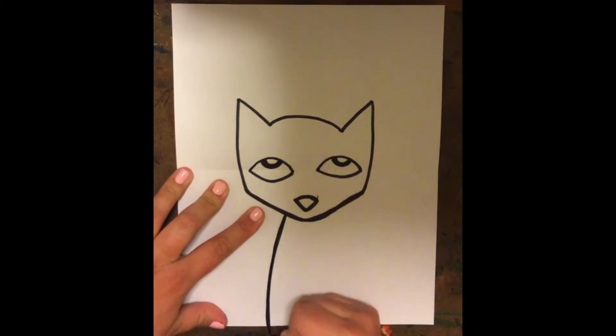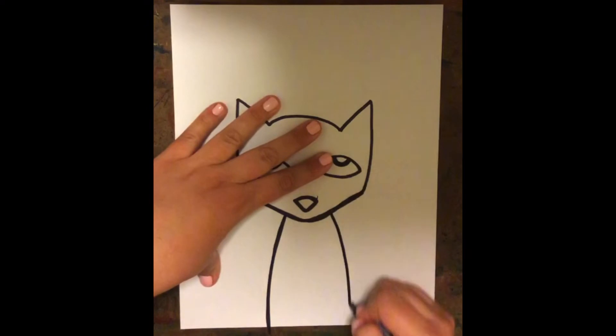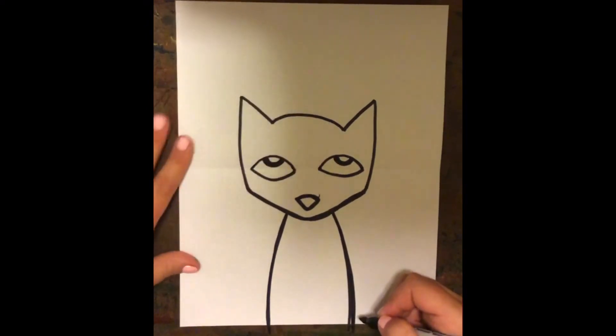And then we're ready for his body. So I'm just going to take a line, I'm going to curve down on both sides. He's pretty small if you look back in the book that we read. We're going to take it all the way down to the edge of the table. There he is.